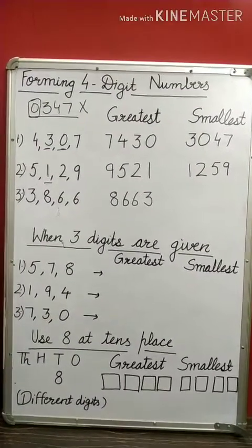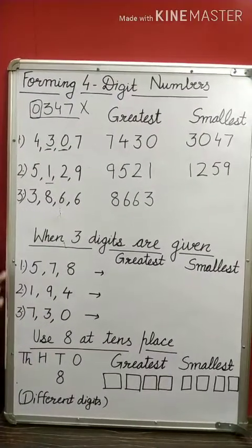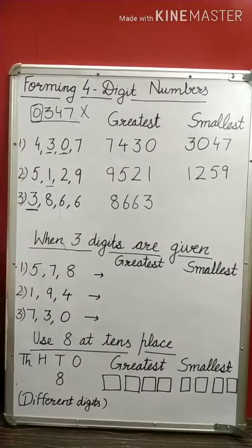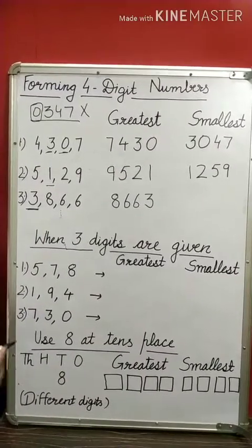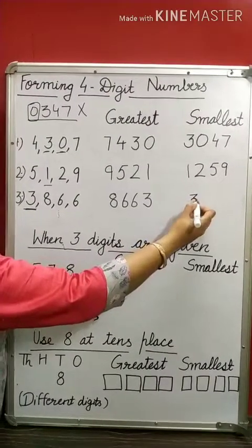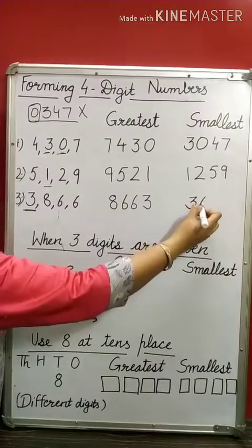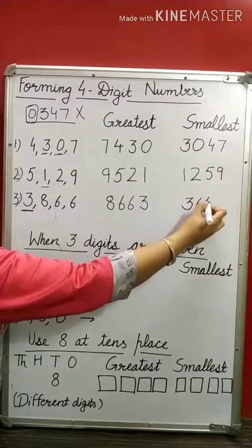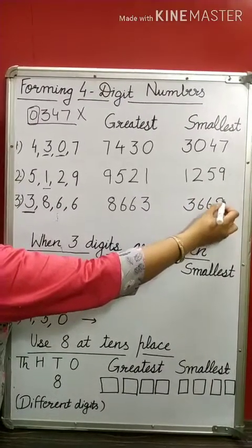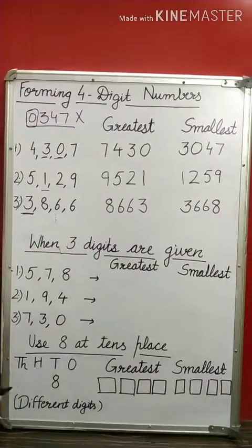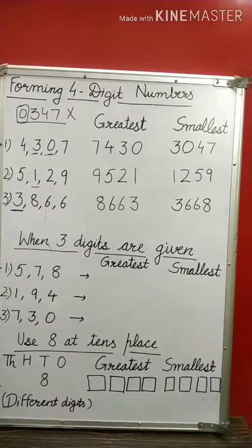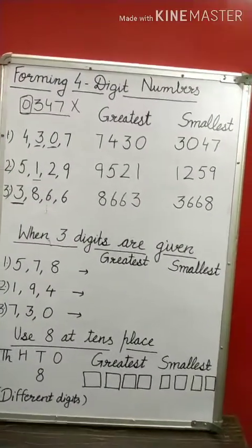Let's take another look. The smallest digit is 3 in this case, so I will write 3 here, then 6, then 6, and then 8. The smallest 4-digit number is 3668.